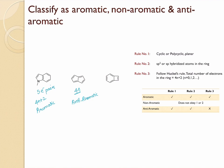The last bicyclic structure is also cyclic and all atoms are sp2 hybridized. For rule three, there are four electron pairs, which falls under the 4n system. Therefore this compound is also anti-aromatic.